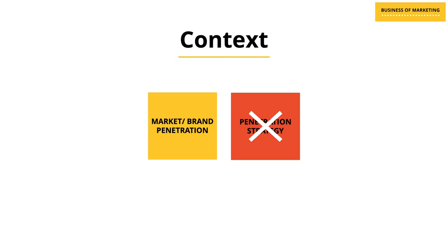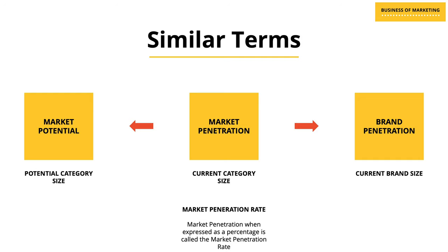So we spoke about a couple of things — let me quickly clarify each one once again. This video is about market and brand penetration and not about penetration strategy; I will do a separate video on that. We looked at similar terms like market potential. Market potential is basically market penetration — which is current customers — plus the potential customers who could possibly become your customers in the future. We also looked at different ways of calculating the market potential rate, the market penetration rate, and the brand penetration rate.